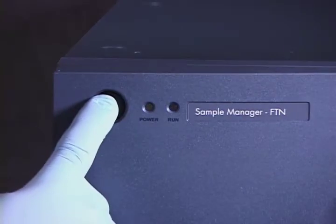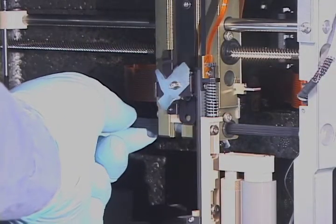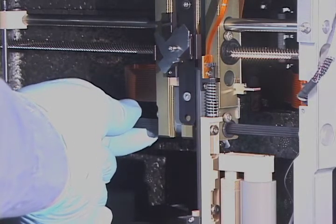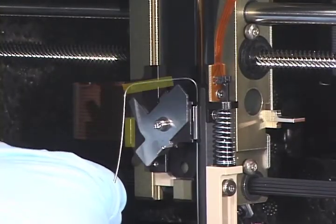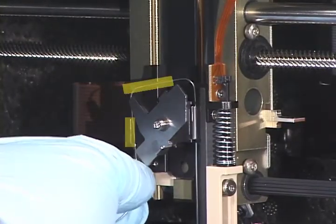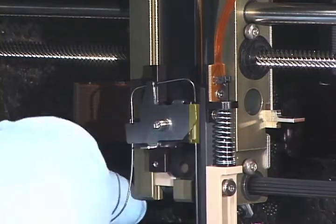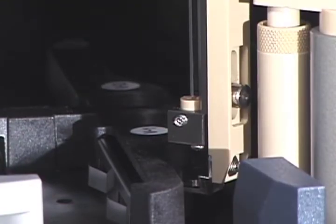Turn off the power to the sample manager. Manually turn the spline shaft to raise the needle carriage. Insert the needle tube into the top and left notches and the mounting cylinder into the mounting cavity. Push the needle latch back and then gently lower the needle into the guide.